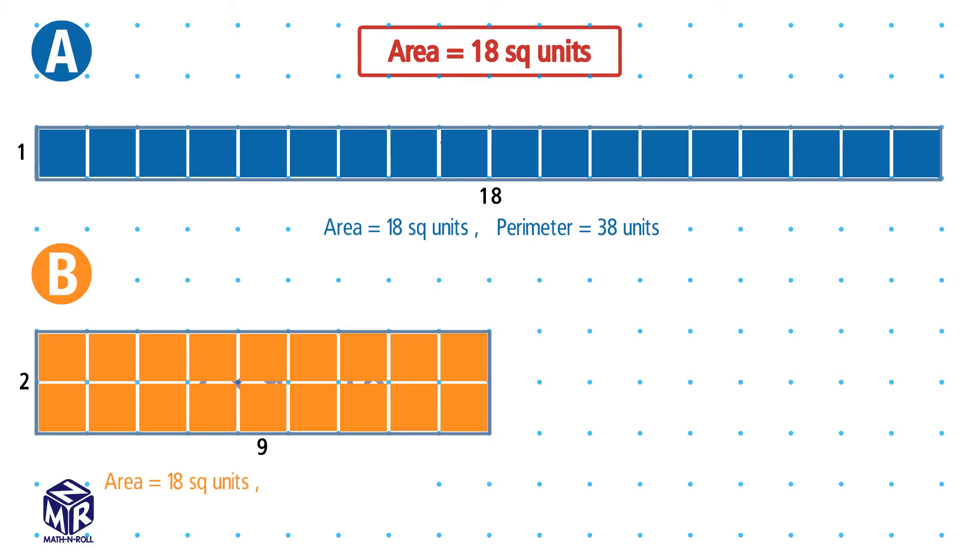Now let's calculate the perimeter. We add the sides. 2 plus 2 plus 9 plus 9 equals 22 units. So rectangle B has an area of 18 square units and a perimeter of 22 units.